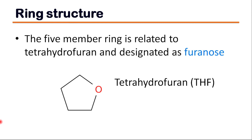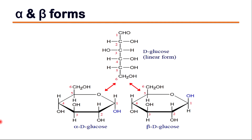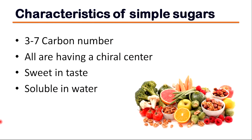Here you can see alpha-D fructopyranose and beta-D fructopyranose. The difference between alpha and beta glucose is nothing more than the position of one of the four hydroxyl groups. In summary, monosaccharides are simple sugars that contain three to seven carbon atoms. They all have a chiral center, are sweet in taste, and are soluble in water.